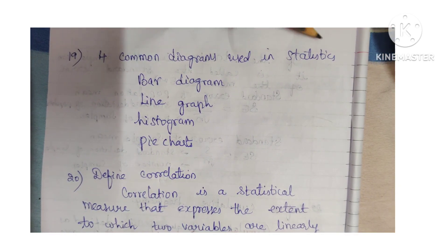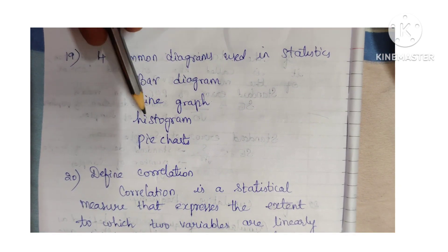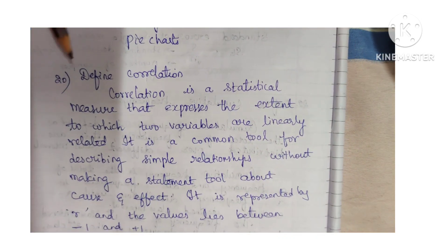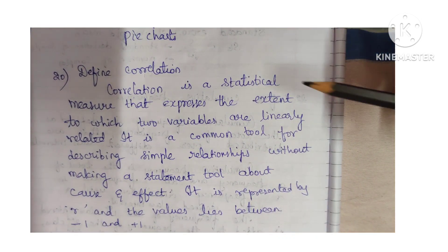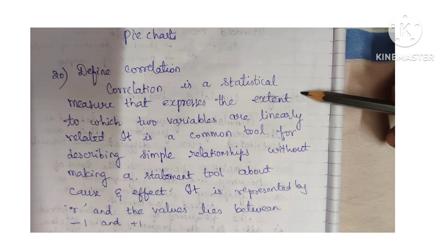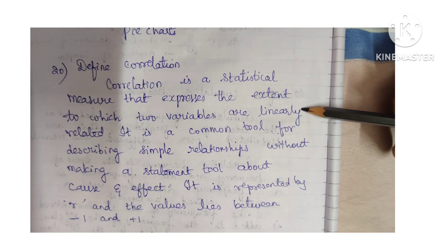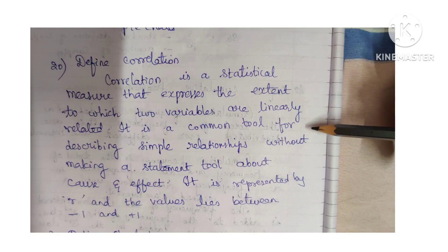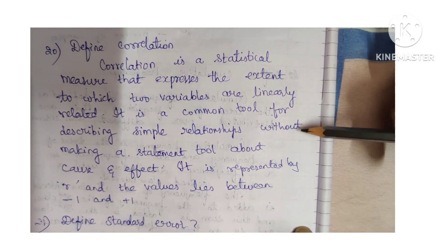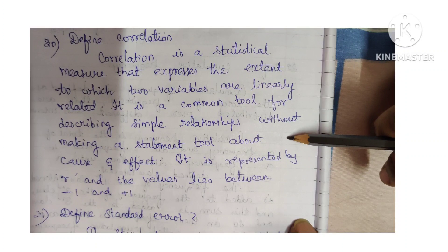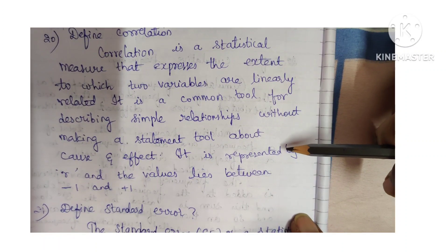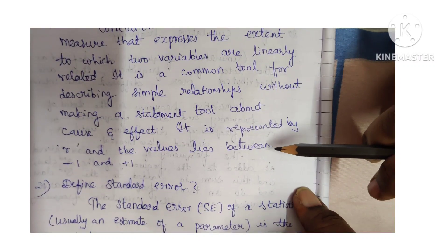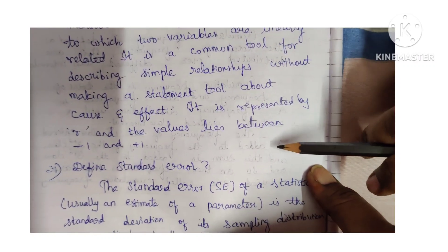4 common diagrams used in statistics: bar diagram, line diagram, histogram, and pie diagram. Define correlation: correlation is a statistical measure that expresses the extent to which two variables are linearly related. It is a common tool for describing simple relationships without making a statement about cause and effect. It is represented by R and the values range between minus 1 and plus 1.